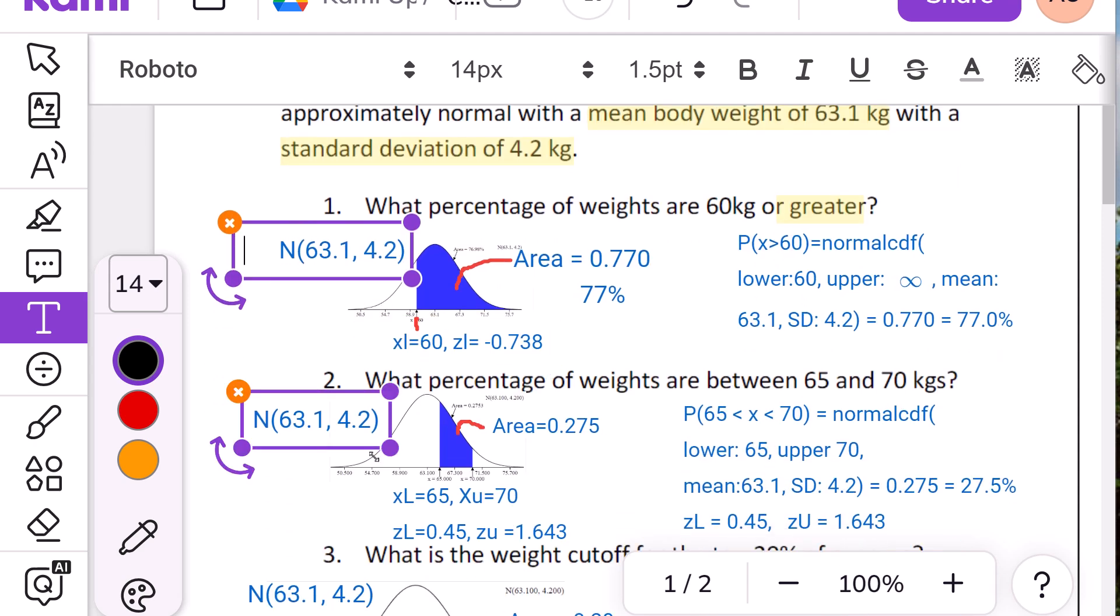And so that kind of walks you through here. These are between. So now you have a lower and an upper. Those tend to be easier because you don't have to do infinities.